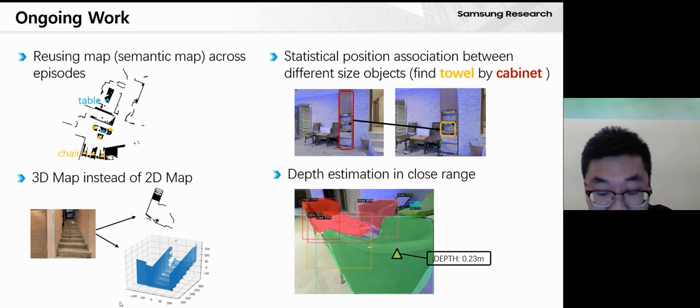Second, we notice that statistical position associations between different objects might be helpful for our task. For example, if we want to find a towel, maybe we can find a cabinet first. Third, we try to use 3D maps instead of 2D maps for navigation. Fourth, we try to add depth estimation to handle the close range problem.